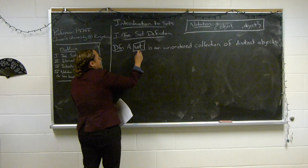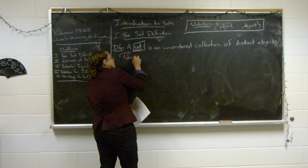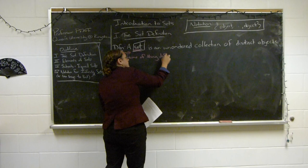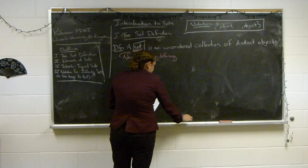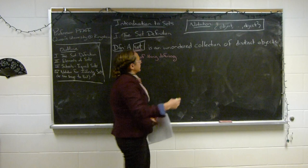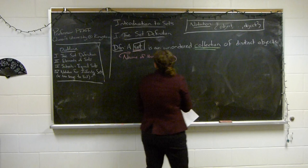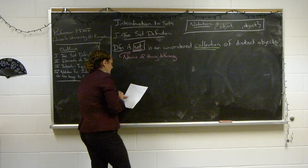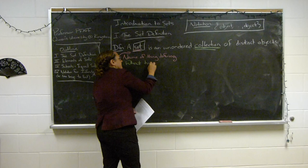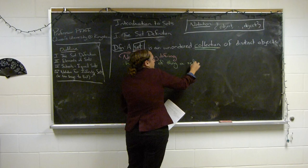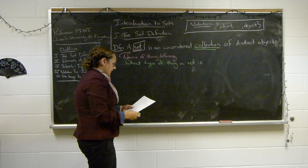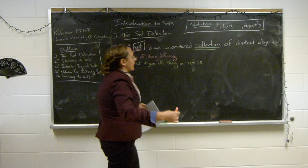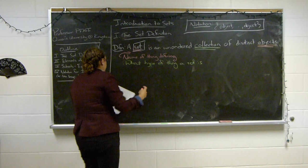The first thing to note is the name of the thing we're defining. The next thing to identify is the type of object you're talking about — in this case, a collection. So a set is a collection of objects. This part tells me what the collection consists of, and it could be anything.